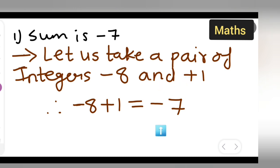I hope you have understood how to write down a pair of integers whose sum is -7.